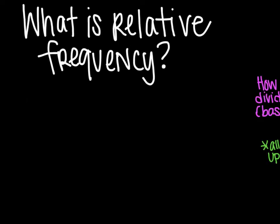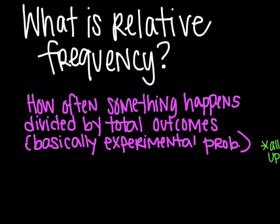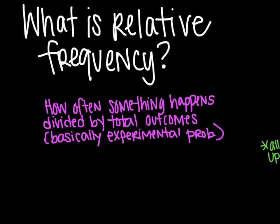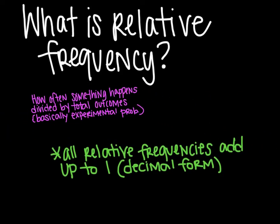Relative frequency is another word that you need to know, especially for your MCAs. So what is it? It is how often something happens divided by the total outcomes. In other words, it's basically your experimental probability. It's just you'll see it written as a decimal. So please make note that it's written as a decimal.